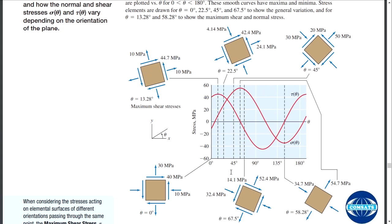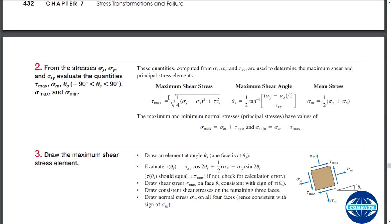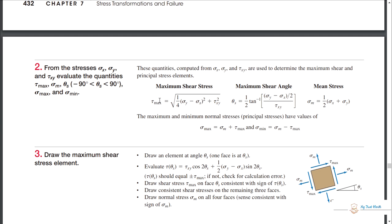We then came to the conclusion that we have to find the plane, or the orientation angle of the plane, at which shear stresses and principal stresses are maximum. We derived the maximum shear stress formula and the maximum shear angle formula. The maximum shear stress will be applied at the maximum shear plane orientation. We also studied that at the plane where maximum shear stresses occur, correspondingly in the other axial directions you will have mean stresses.